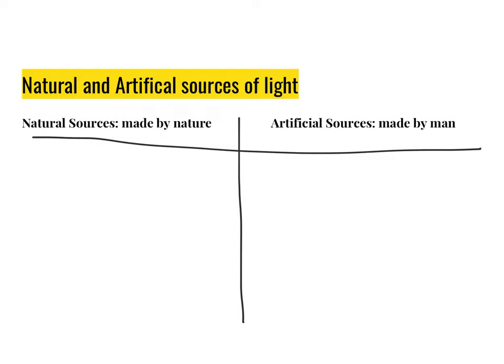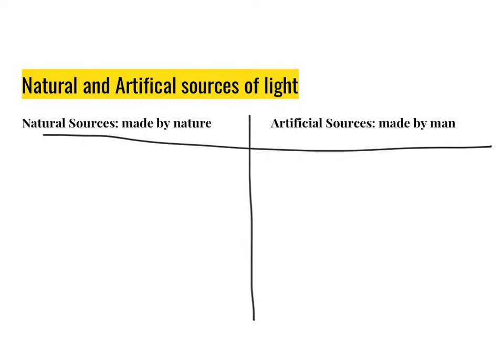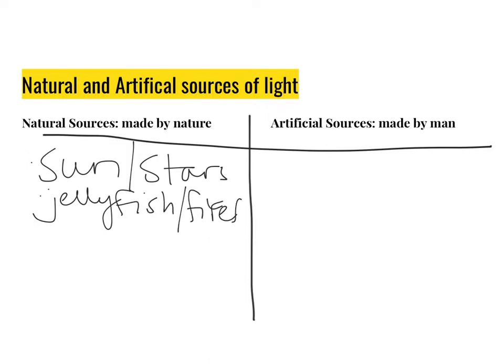We have the sun. We also have stars, as our sun is a star. We've got different organisms as well, like jellyfish and fireflies. Other things include things like fire. What else could we include as natural sources? Let me think about that for a minute. There are many other natural sources. I'm just trying to think of a few.